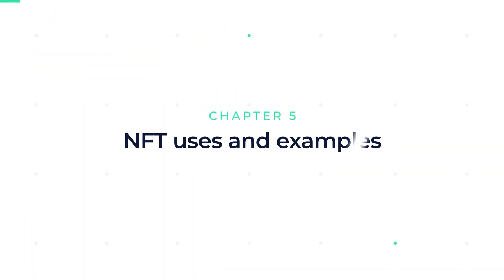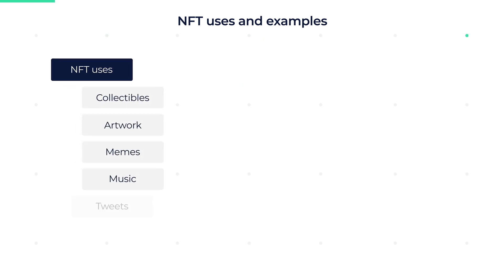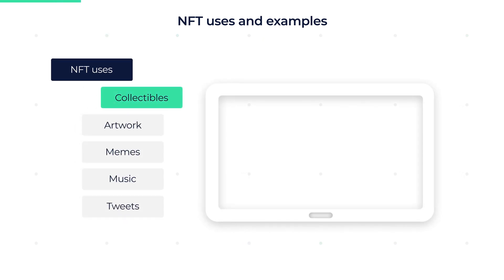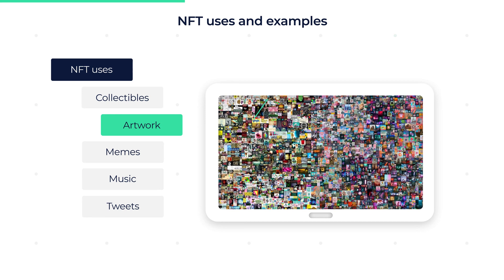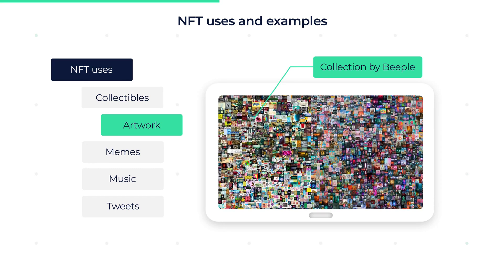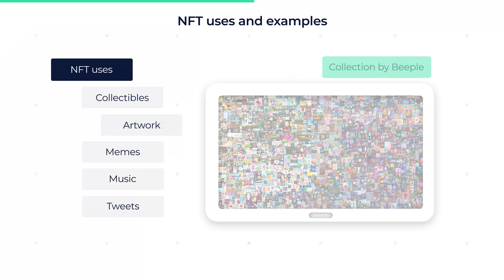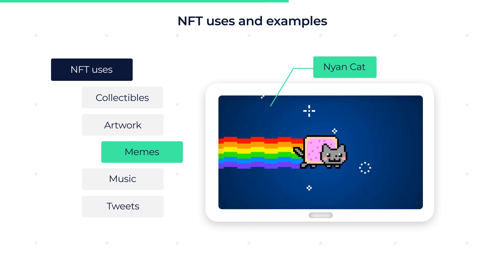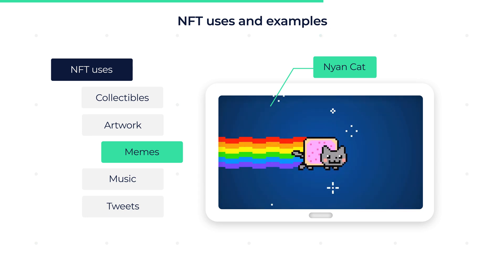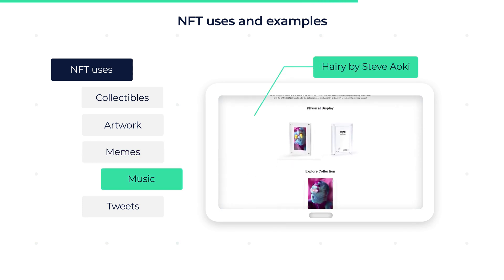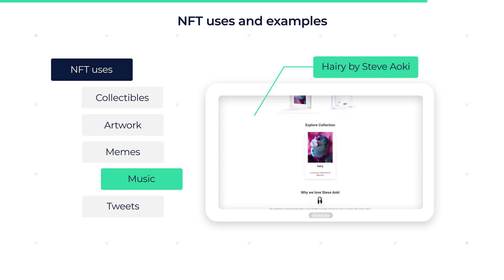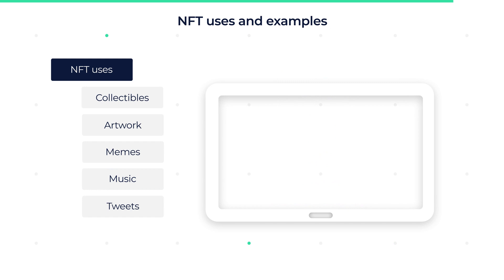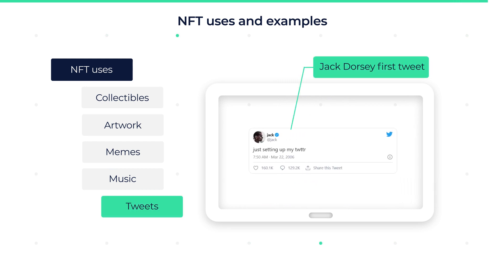Chapter 5: NFT Uses and Examples. NFTs have many uses. Collectibles: NBA Top Shots are captured moments of NBA games that become collectibles when minted and are traded amongst fans. Artwork: the collection by Beeple includes many of the digital artist's pieces and was sold for $770,000. Memes: an NFT featuring the Nyan Cat meme sold for $590,000. Music: Steve Aoki collaborated with Anthony Tedewski to produce the NFT 'Harry,' which sold for $888,888. Tweets: Jack Dorsey's first tweet sold for $2.5 million.